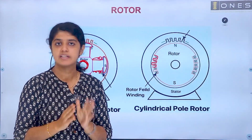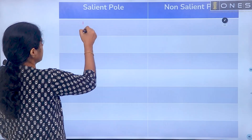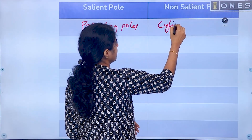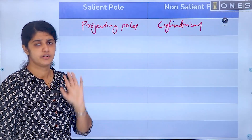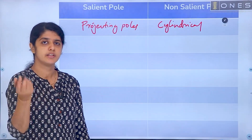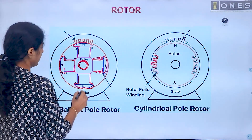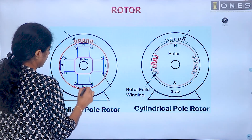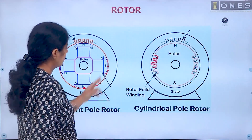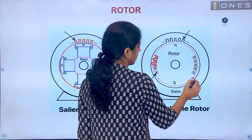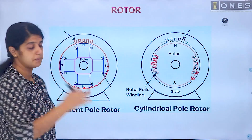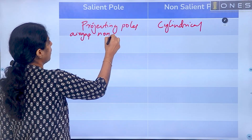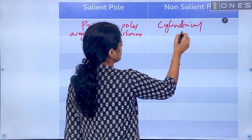First, let's compare the structures. In the salient pole, we use projecting poles, while in the non-salient pole, we use the cylindrical structure. Regarding the air gap: in the salient pole machine, the air gap is non-uniform, whereas in the case of non-salient pole, the air gap is uniform.